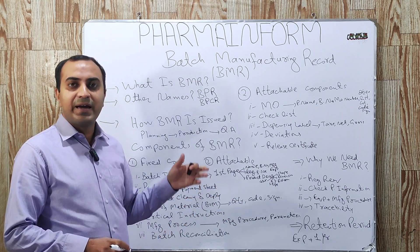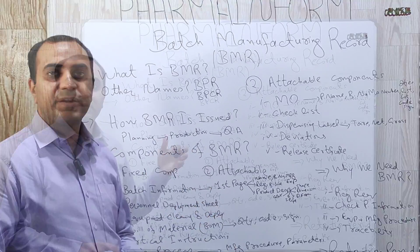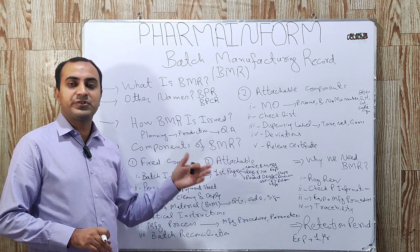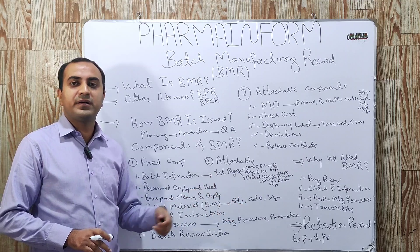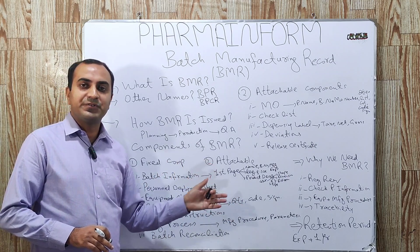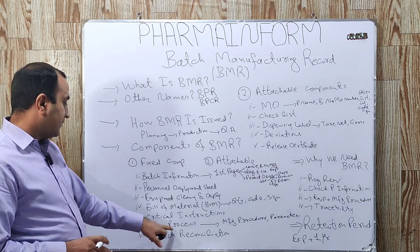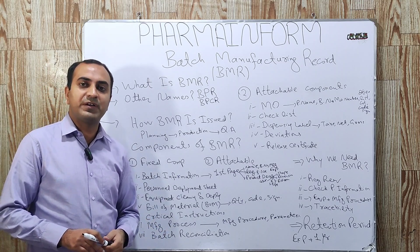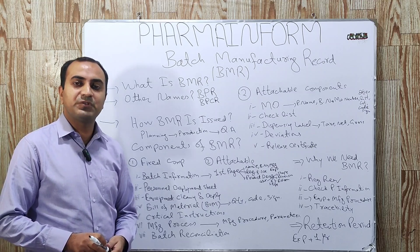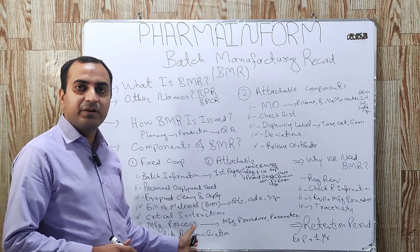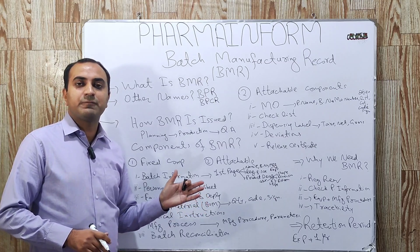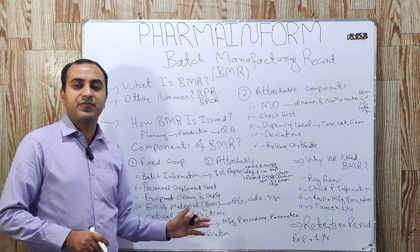The next fixed component is critical instructions. In this portion, before starting the manufacturing of a batch, any critical instructions are mentioned. For example, if you are going to manufacture a product which is light-sensitive, the instruction to handle the material and avoid it from light will be mentioned here.